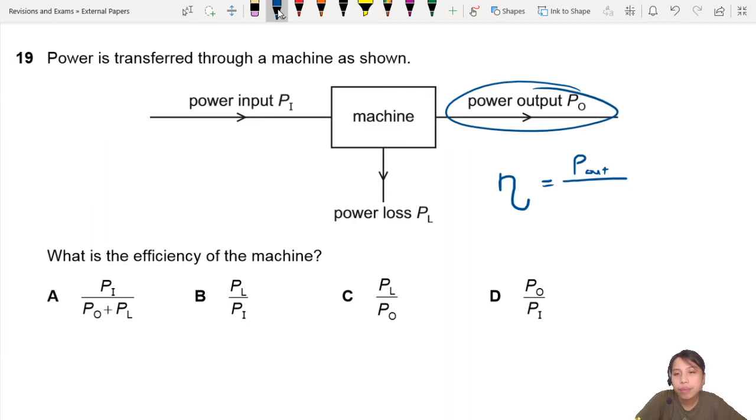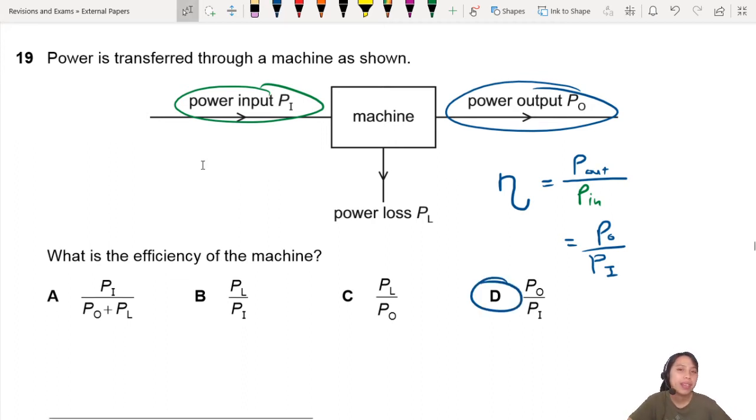What about power loss? I don't know, we don't care about how much power is lost. We just need to know output over input. So in this case it will be P_O over P_I. Answer is D. Okay, didn't turn out too bad.